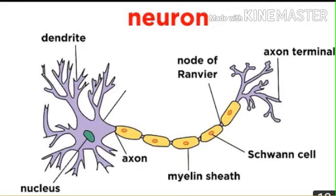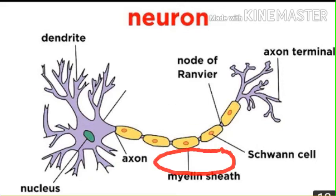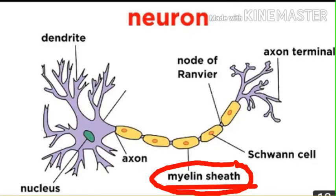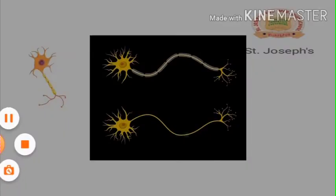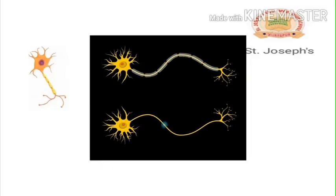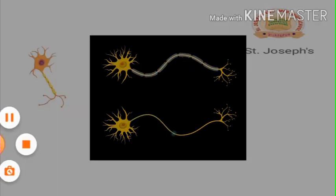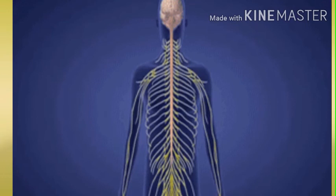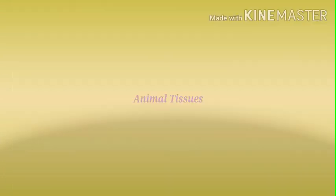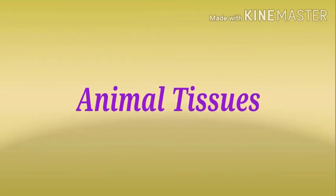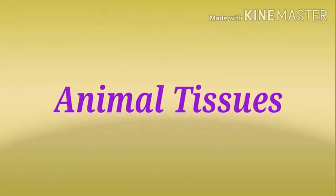Next, the neuron has an axon, and the neuron's signals pass down the axon. The axon has insulation called the myelin sheath. At the end of the axon is the axon terminal, which communicates with the dendrites of other cells. This allows electrical signals to flow throughout our body. With this, we end the chapter on animal tissue.